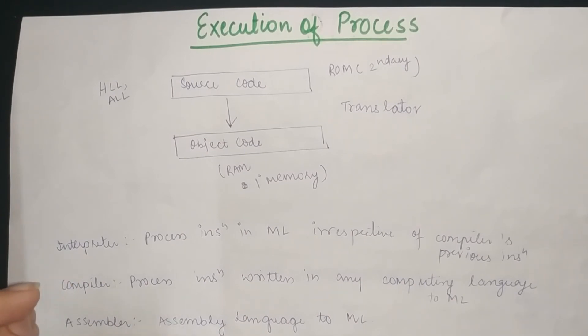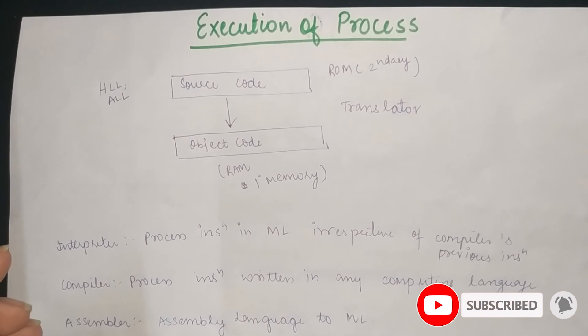Third one is compiler. The compiler means that if we write the code in high level language, then we can convert it to machine language.